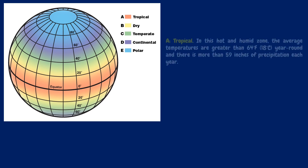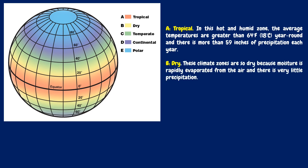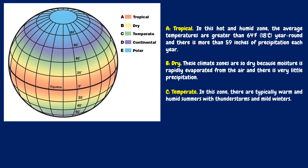They are: Tropical — in this hot and humid zone, the average temperatures are greater than 64 degrees Fahrenheit or 18 degrees Celsius year-round, and there is more than 59 inches of precipitation each year. Dry — these climate zones are so dry because moisture is rapidly evaporated from the air and there is very little precipitation. Temperate — in this zone, there are typically warm and humid summers with thunderstorms and mild winters.